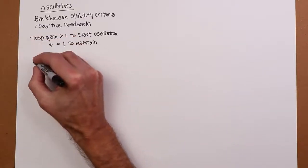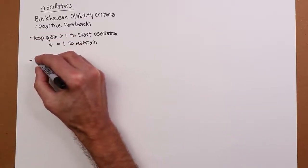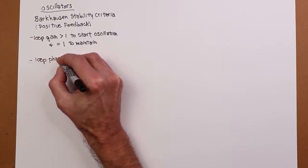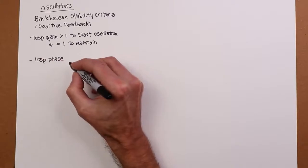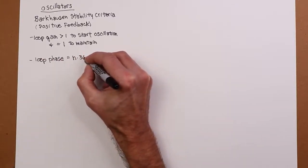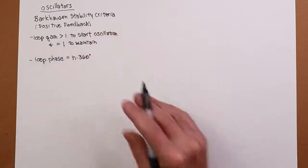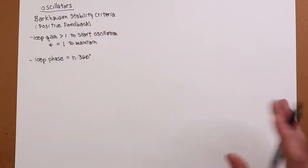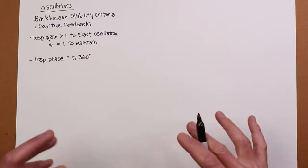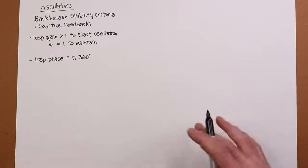Second thing. Loop phase must be an integer multiple of 360 degrees. That's what makes it positive feedback. Negative feedback, you might recall, makes things more stable. Positive feedback makes things unstable. It makes them oscillate.